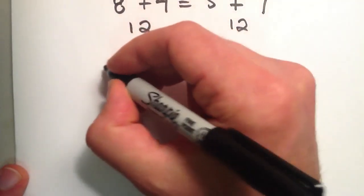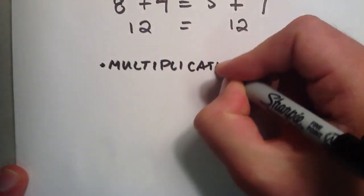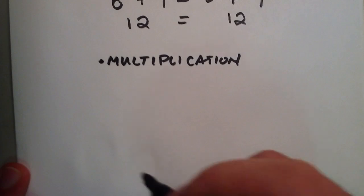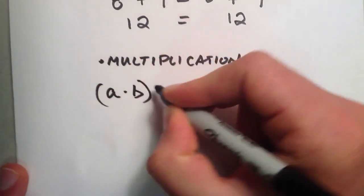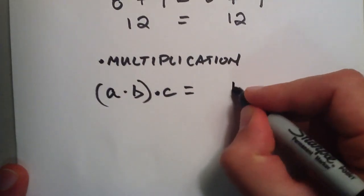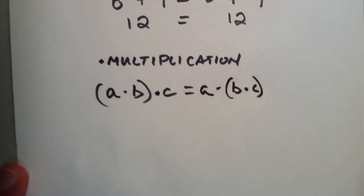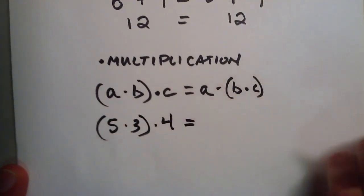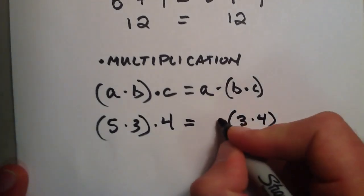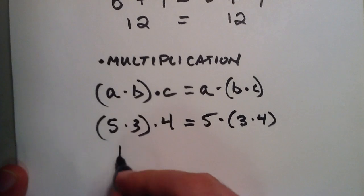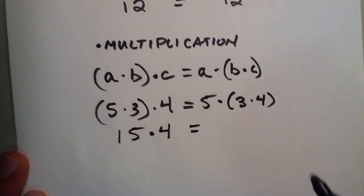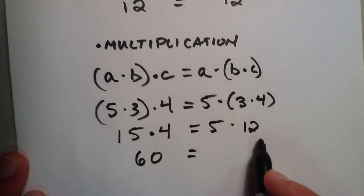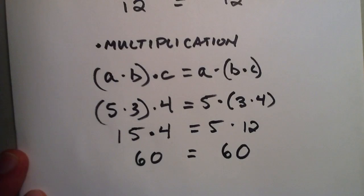The next one is the associative property of multiplication. And it's really similar to the associative property of addition. Basically, it says that A times B, and then you take that and you multiply it by a third number, C. It's the same thing as taking the B times the C, and then multiplying that result times the A. So, the numbers I chose, once again, would be 5 times 3, then multiply that result times the 4. Or I could say, let's do the 3 times the 4 first, and multiply that result times the 5. 5 times 3 gives us a 15. We'll multiply that by 4. 3 times 4 gives us a 12. We're going to multiply that by 5. 15 times 4 is 60. And 5 times 12 is also 60. So, there you go. There's an example of the associative property of multiplication.